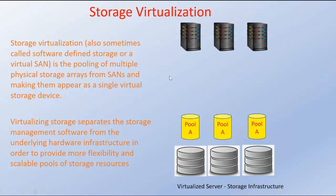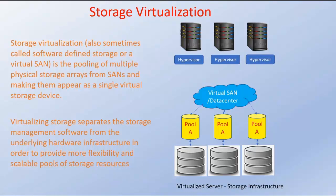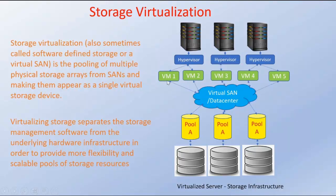What we have to do is first create a pool of storage devices using these three storage devices. Once we create a pool, we can have something called a virtual SAN or data center. This virtual SAN will be connected to the storage devices using these pools. On the server side, we have a hypervisor like ESXi or Hyper-V from Microsoft, and virtual machines can be running on these hypervisors. Our virtual machines can now connect to any one of these storage devices using the virtual SAN. From the virtual machine point of view, we have only one data center, and managing these virtual SANs happens through a single console.